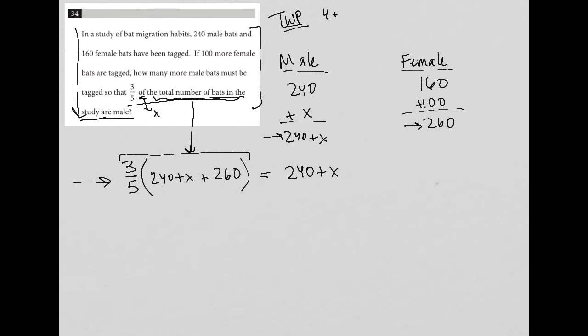So now I just need to simplify this. So I have three-fifths, 240 plus 260 is 500, so 500 plus x equals 240 plus x. Now I'm going to multiply this three-fifths in. So by doing that, three-fifths times 500, five crosses out, five goes into 500, 100 times, and three times 100 is 300. So three-fifths times 500 is 300.